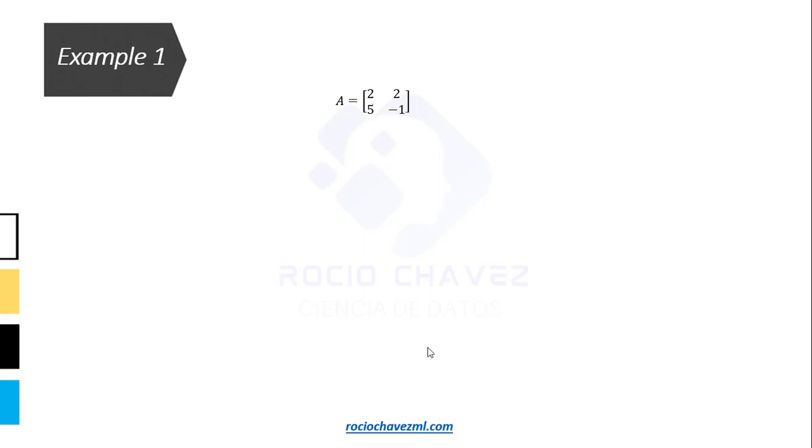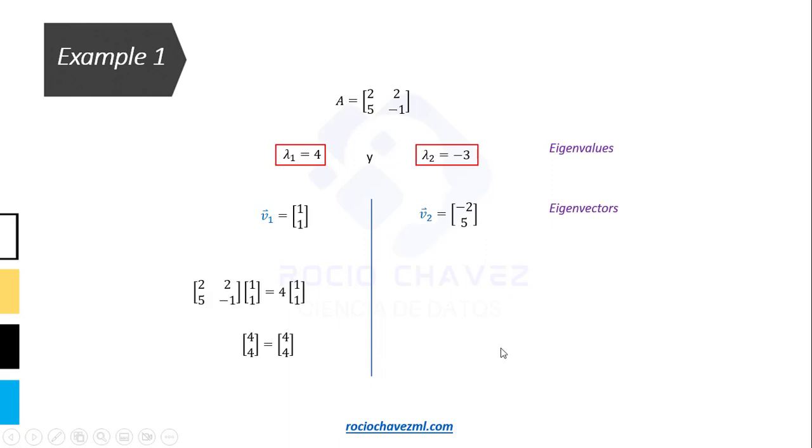The first one is a non-symmetric matrix. That is, the values above and below its main diagonal are different. Since this matrix is 2 by 2 in size, we have two eigenvalues and two eigenvectors. The eigenvalues are lambda 1 equal to 4 and lambda 2 equal to minus 3. The corresponding eigenvectors are v1, whose elements are 1 on the x-axis and 1 on the y-axis, and v2, whose elements are minus 2 and 5. If we multiply lambda 1 by v1, we get the vector 4,4. And if we multiply lambda 2 by v2, we get the vector 6 minus 15.